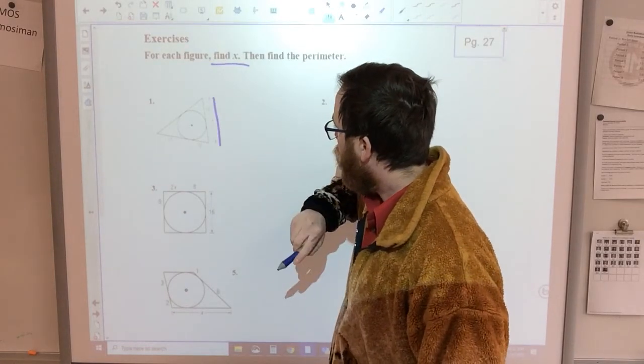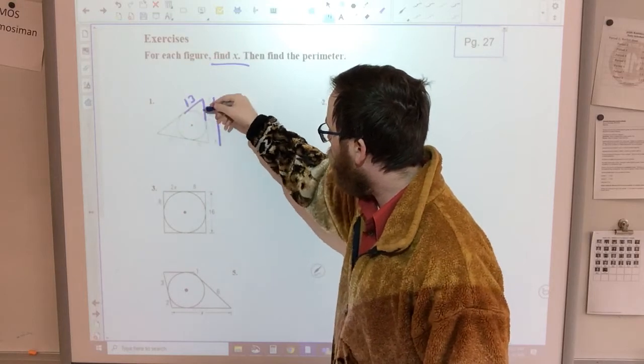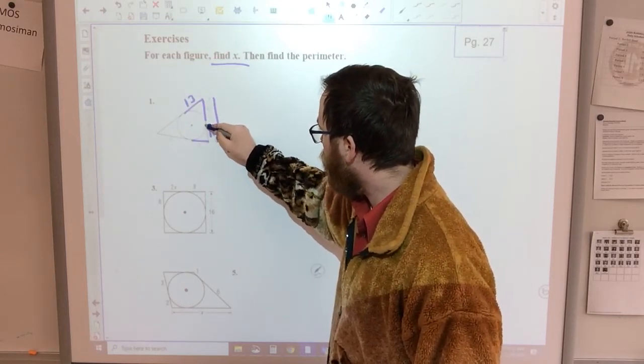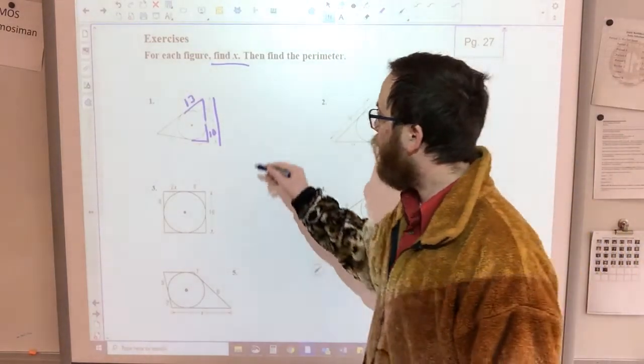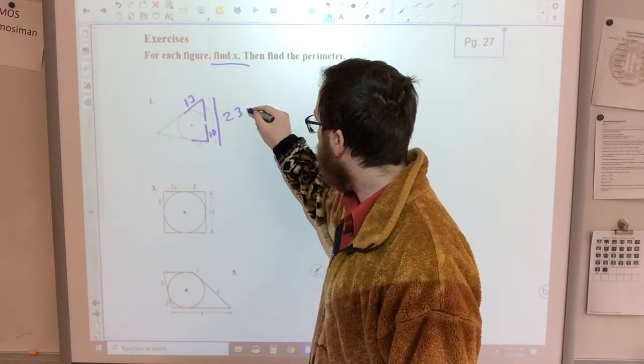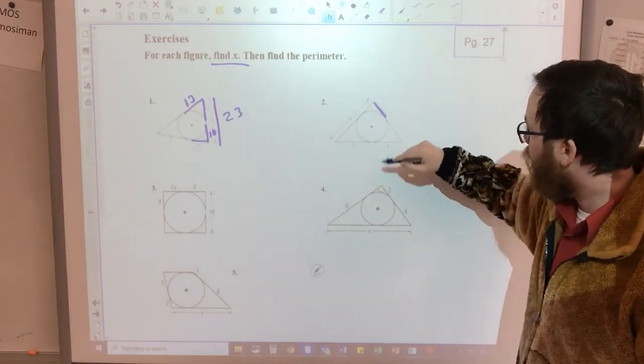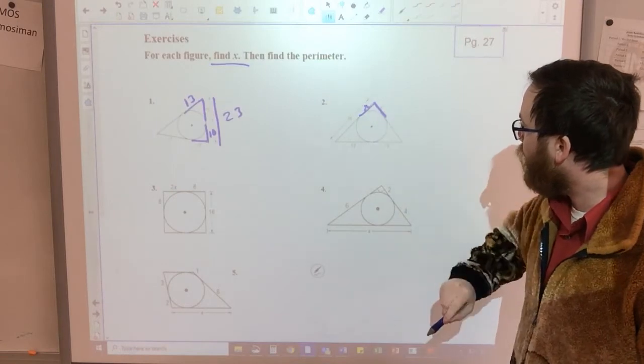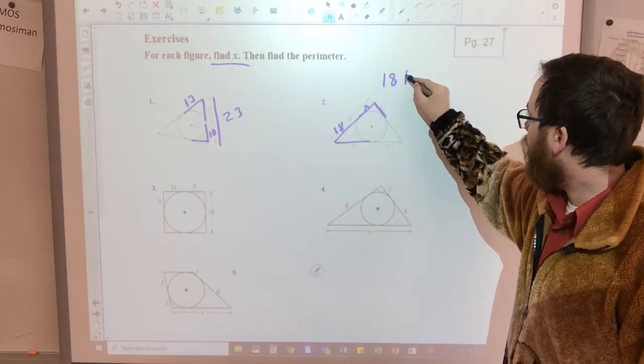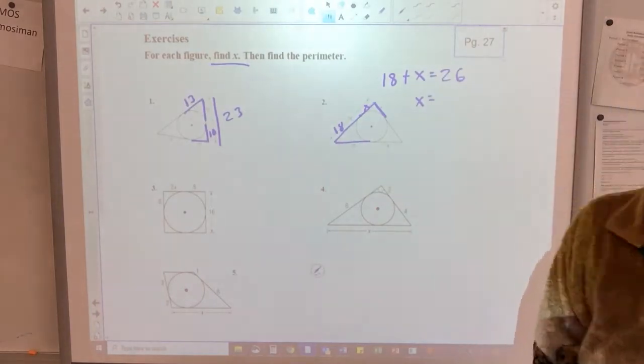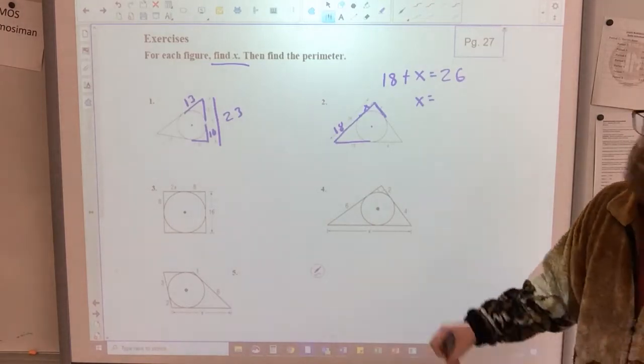Here's x. If this piece is 13, that means this piece is 13. Well, I don't care about over there, so I'm going to now go down here. If this piece is 10, that means this piece is 10. So x is equal to 23. So that's just 13 plus 10. And over here, if I want to find x, well, this piece is representing x, that means this piece is also x. This piece is 18. That means this piece is also 18. 18 plus x is equal to 26. So x must equal 8.